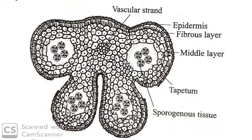I have already mentioned that anther is the male sex organ of the plant. The mature anther is a four-lobed structure. The four lobes are connected by parenchymatous connective tissue, supplied with a vascular strand.